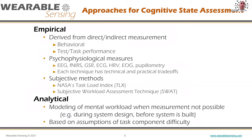How are cognitive states usually assessed? There are two general categories: empirical and analytical. On the empirical side, the most basic approach is to derive the assessment from direct or indirect measurement. This could be a behavioral assessment — observing what the person is doing, whether they look like they're thinking or phasing out. We can also give them a battery of cognitive tasks to assess what's happening and look at their performance.